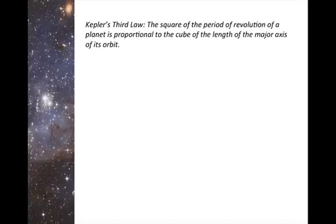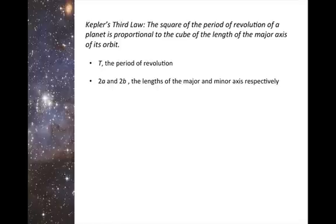Moving on to Kepler's third law, which states that the square of the period of revolution of a planet is proportional to the cube of the length of the major axis of its orbit. I want to start with a few variables we're going to be using. We have T, which is our period of revolution, and we have 2a and 2b, which are the length of the major and minor axes, respectively.